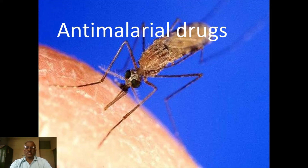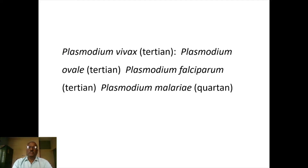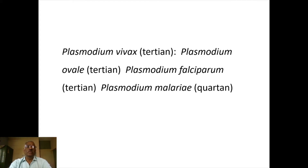Malaria is an important communicable disease. It is caused by the female Anopheles mosquito, specifically Plasmodium species. There are 4 Plasmodium species that cause malaria in humans: 1. Plasmodium vivax, 2. Plasmodium ovale, 3. Plasmodium falciparum, and 4. Plasmodium malariae. The first is tertian malaria, Plasmodium malariae causes quartan malaria.